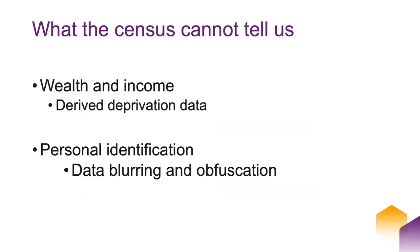What the census can't tell us: it can't tell us anything about wealth or income — there are no questions asked on that at all. There is some derived deprivation data from other information within the census. There is no personal identification for 100 years — there's data blurring, obfuscation, and sometimes cell swapping so that people can't be identified as individuals.